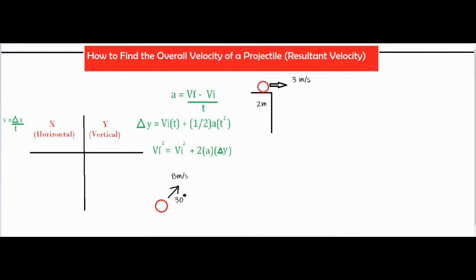A lot of times with a projectile problem you break things into an x column and a y column. The reason you do that is because there are no forces in the horizontal direction when something is released or launched, so it stays moving at a constant velocity horizontally and we only use the distance formula there. In the vertical direction we have gravity pulling downwards causing acceleration, so we use three kinematic formulas for an object that is speeding up or slowing down.